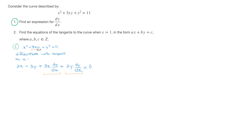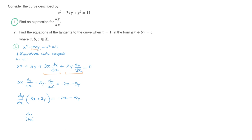I'll leave these two terms on the left-hand side and subtract 2x plus 3y from both sides, which gives us 3x dy/dx plus 2y dy/dx equals negative 2x minus 3y. Factoring out dy/dx on the left gives dy/dx times (3x plus 2y) equals negative 2x minus 3y. Dividing both sides by (3x plus 2y), we obtain dy/dx equals (negative 2x minus 3y) over (3x plus 2y).